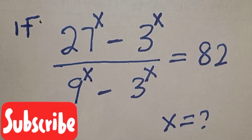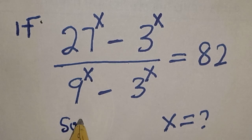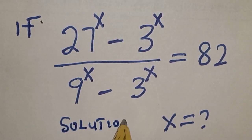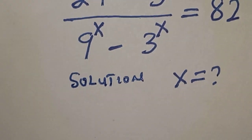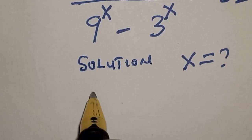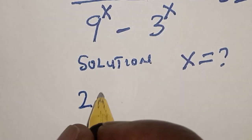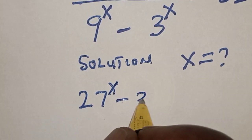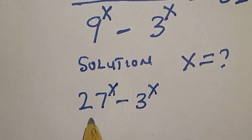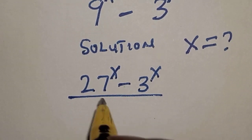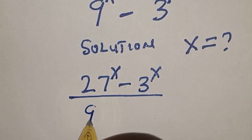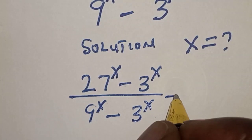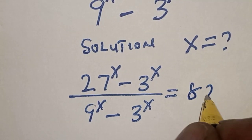Solution. The equation is: 27 raised to power s minus 3 raised to power s, divided by 9 raised to power s minus 3 raised to power s, is equal to 82.